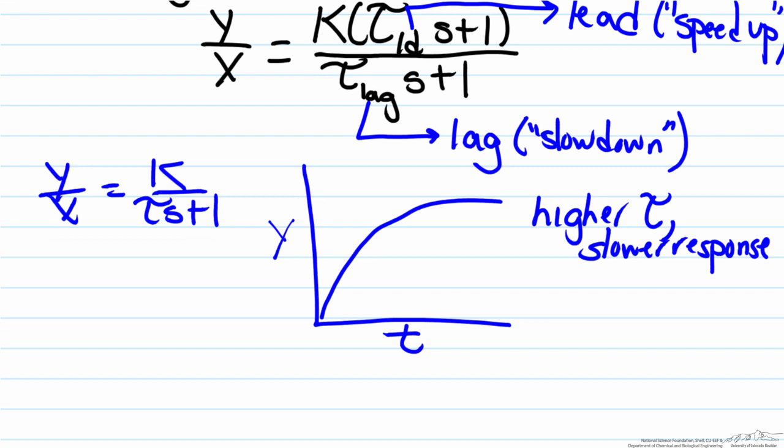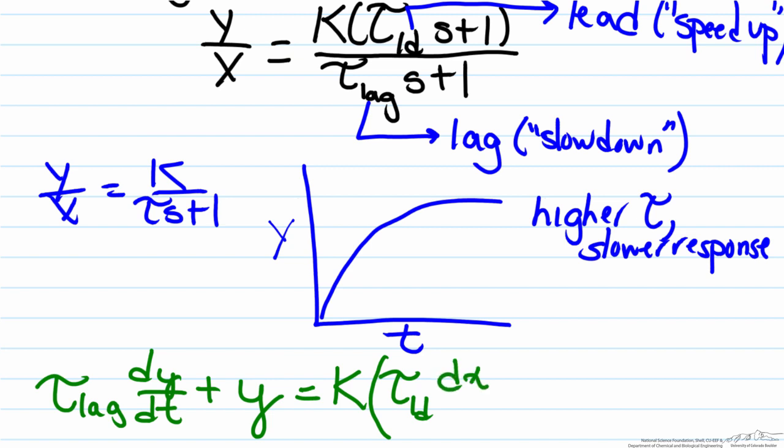If we think about it for a second, the denominator term always comes from the dynamics with respect to the y value. So therefore this would be something on the order of tau lag dy dt plus y. But since we have this tau lead s plus one in the denominator, what that is indicative of is actually the fact that the input variable, in our case here x, also has some derivative relationship with respect to time.